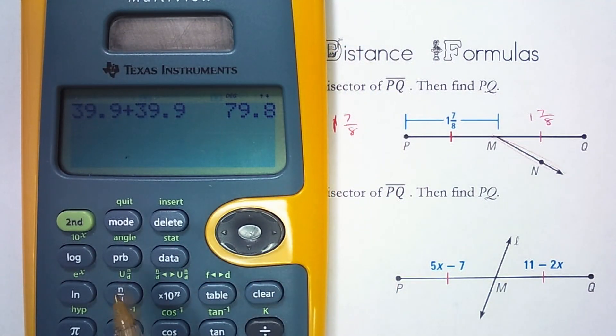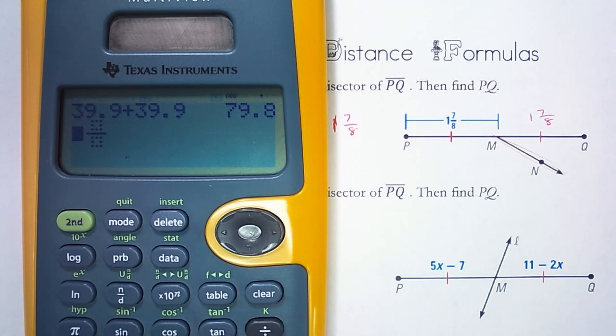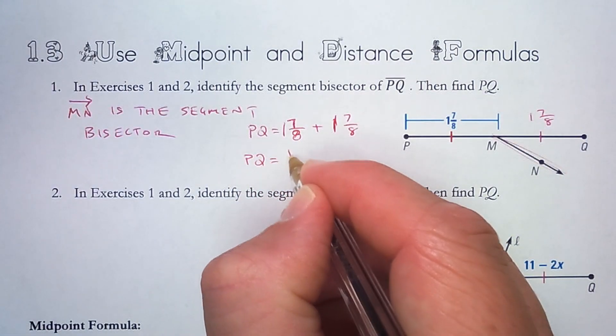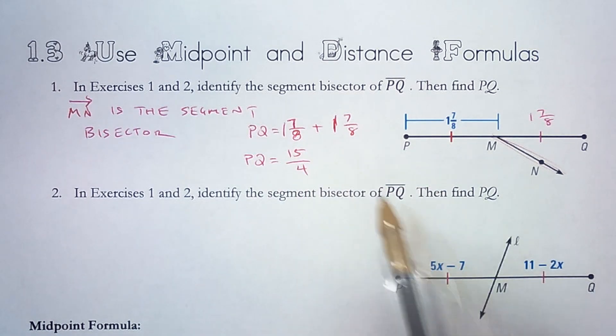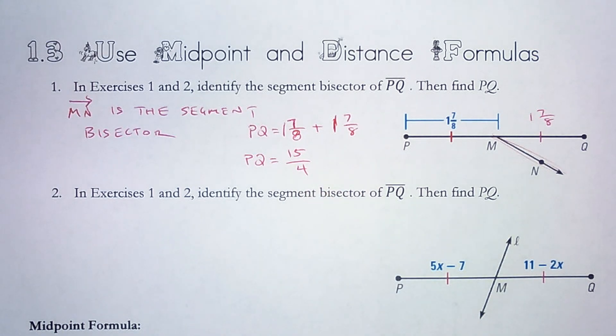So I can use this button right here, the second function. So second, and then this mixed number sets me up to put in that fraction. So 1 and 7 eighths plus 1 and 7 eighths, which is really the same as times 2, and it'll be faster and easier to do times 2. And I get 15 fourths. So PQ is 15 fourths. Improper fractions are really nice, especially when you have to do something further with that fraction. In this case, we don't really have to do anything further with it. So I can leave it like that, or I can make it a mixed number.